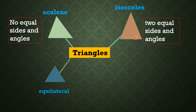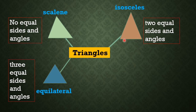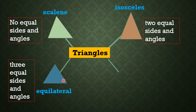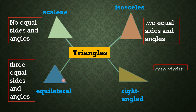Next is an equilateral triangle. An equilateral triangle has three equal sides and three equal angles — all the sides are equal and all the angles are equal. Next is a right-angled triangle. A right-angled triangle has one right angle.